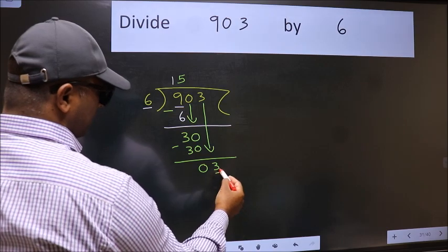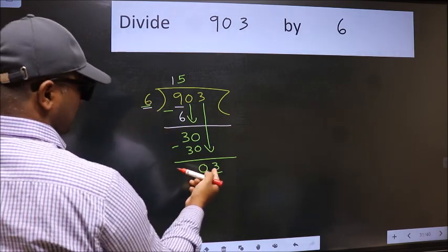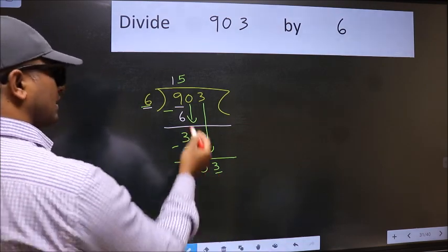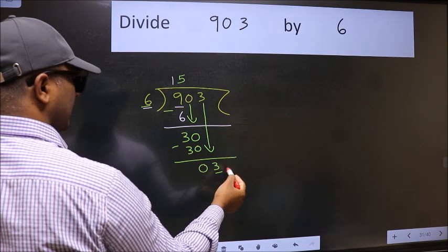Here we have 3 and here 6. 3 is smaller than 6. So what many do is, they directly put dot, take 0.